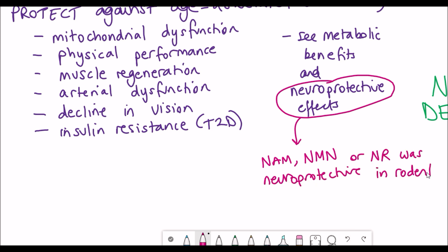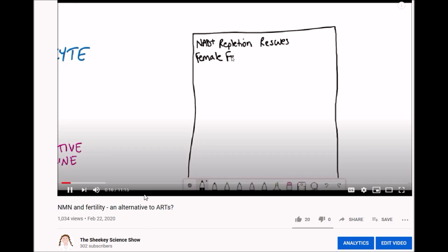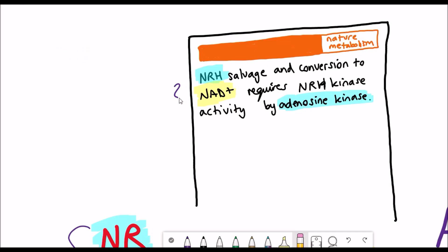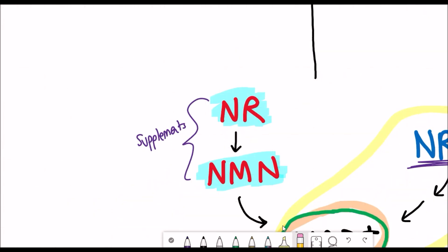Mechanisms to increase NAD plus level include supplements such as NR and NMN which I've talked about previously in other videos. But in this video we want to talk about an alternative to these precursors and instead talk about NRH, otherwise known as dihydronicotinamide riboside.